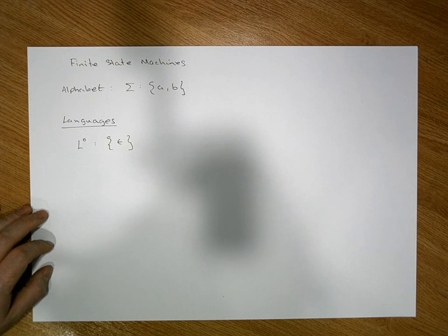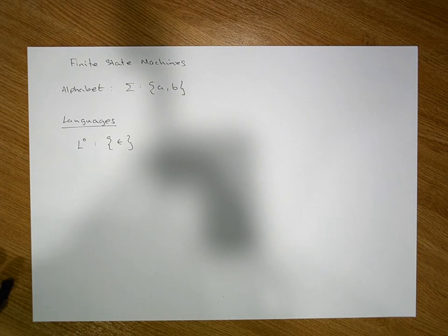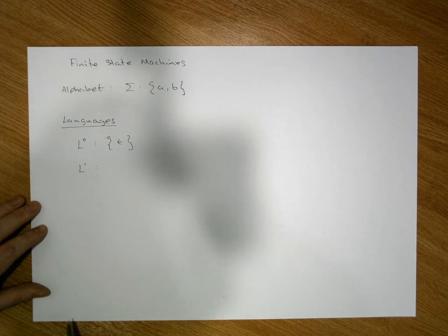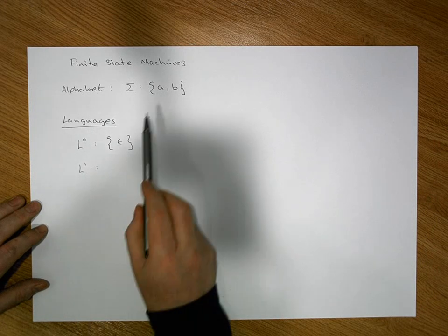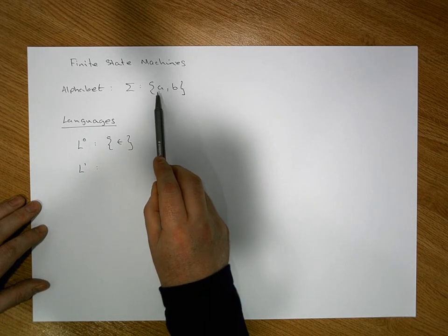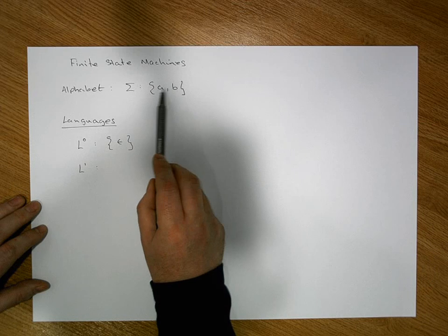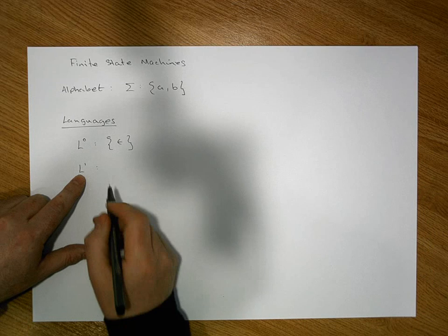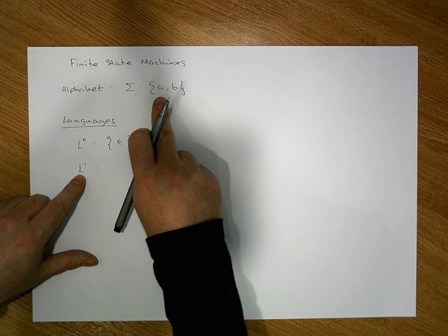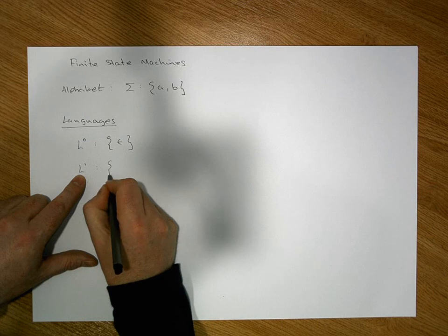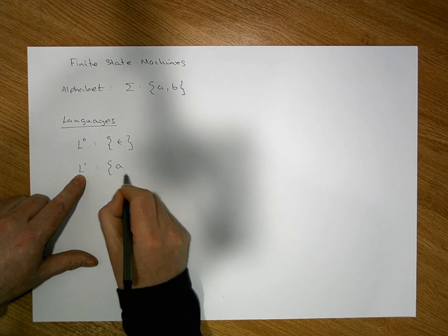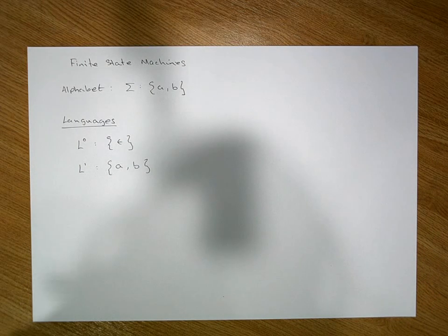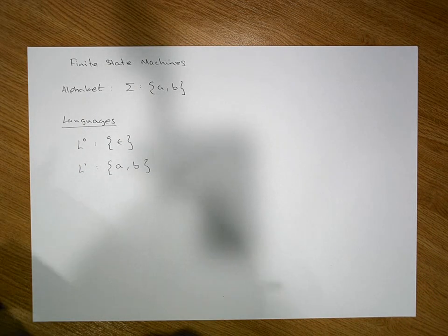We won't concentrate too much on L0 at this stage, but we'll come back to it in later videos. The next language we might be interested in is the language of words of length one. The only words of length one are single alphabet characters or symbols, so L1 consists of simply the string A and the string B.